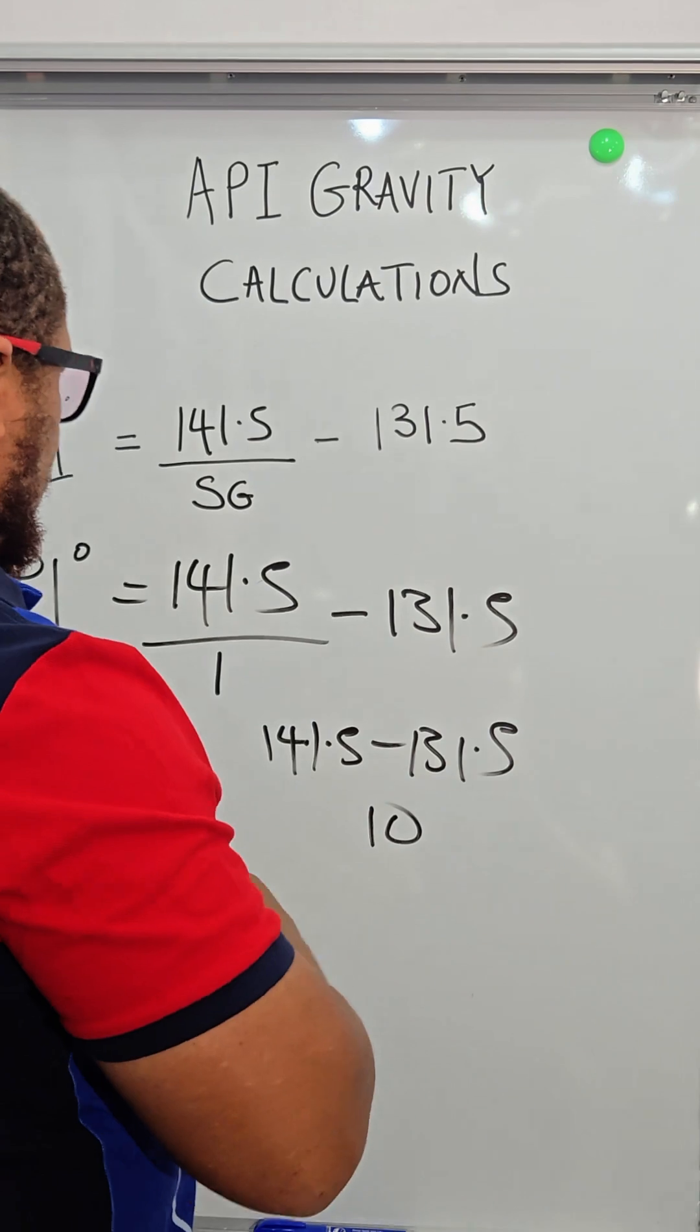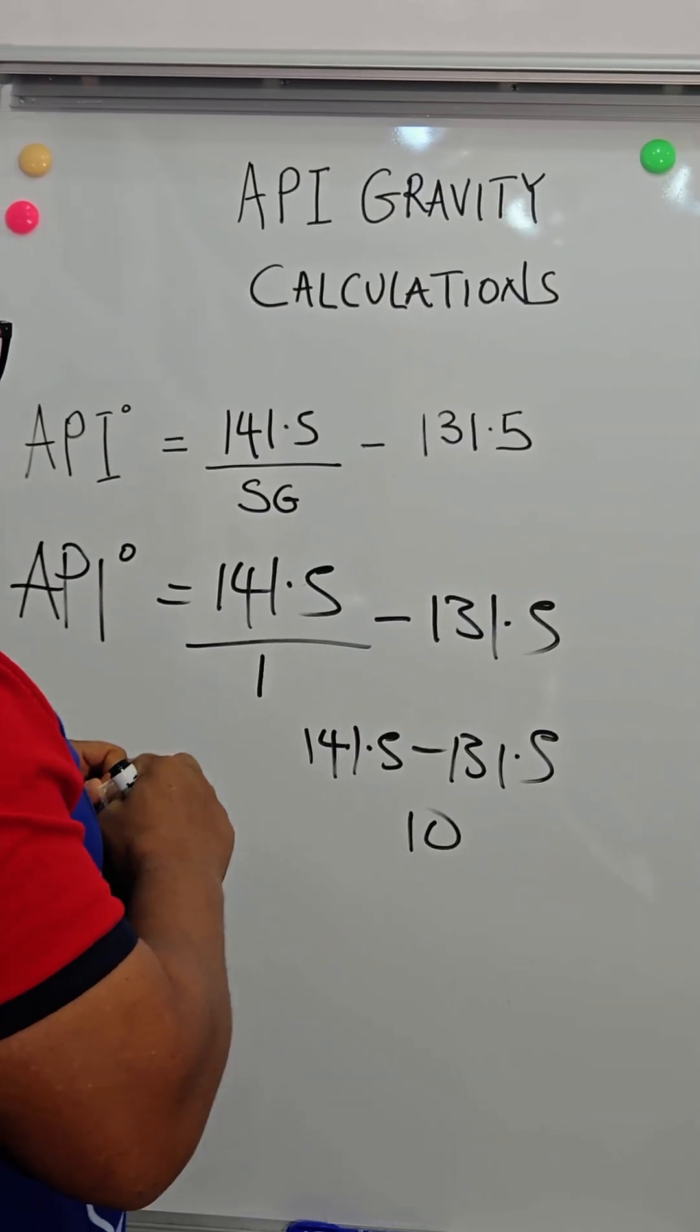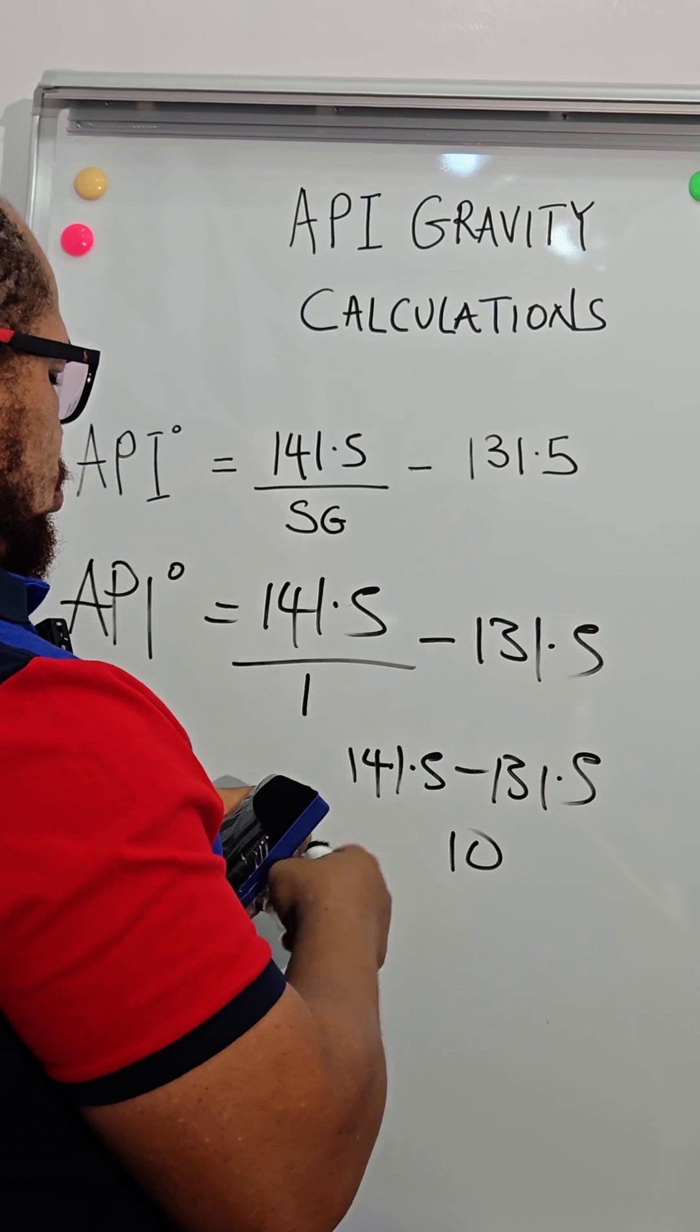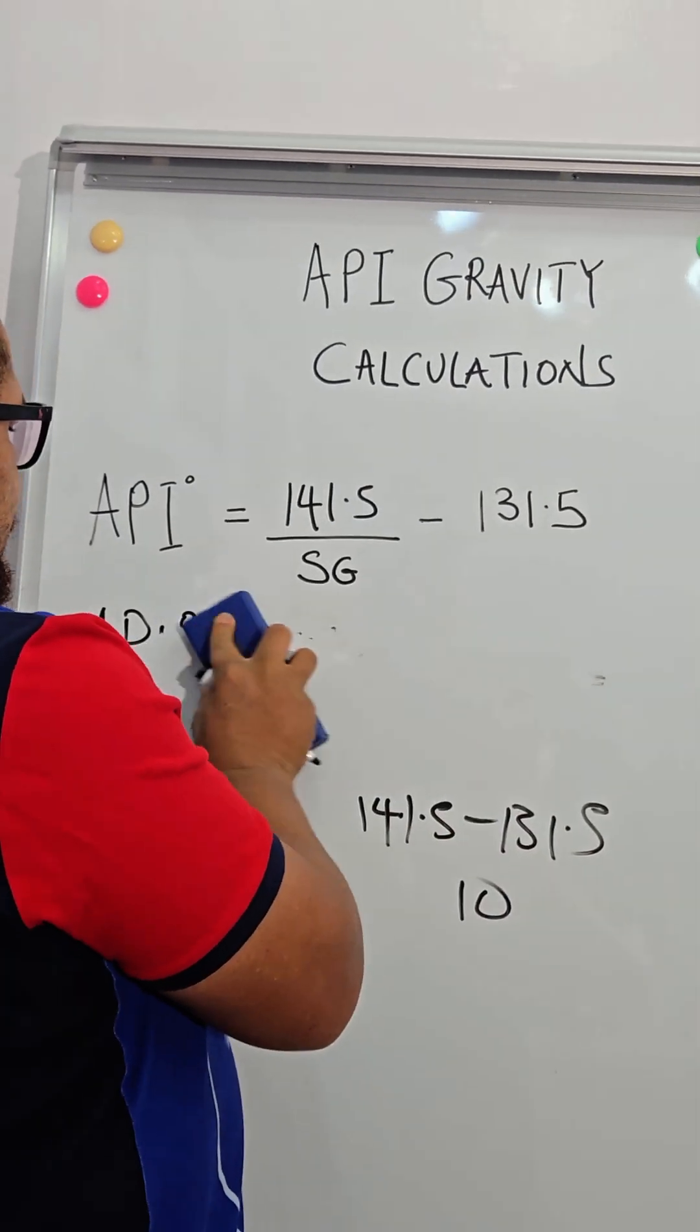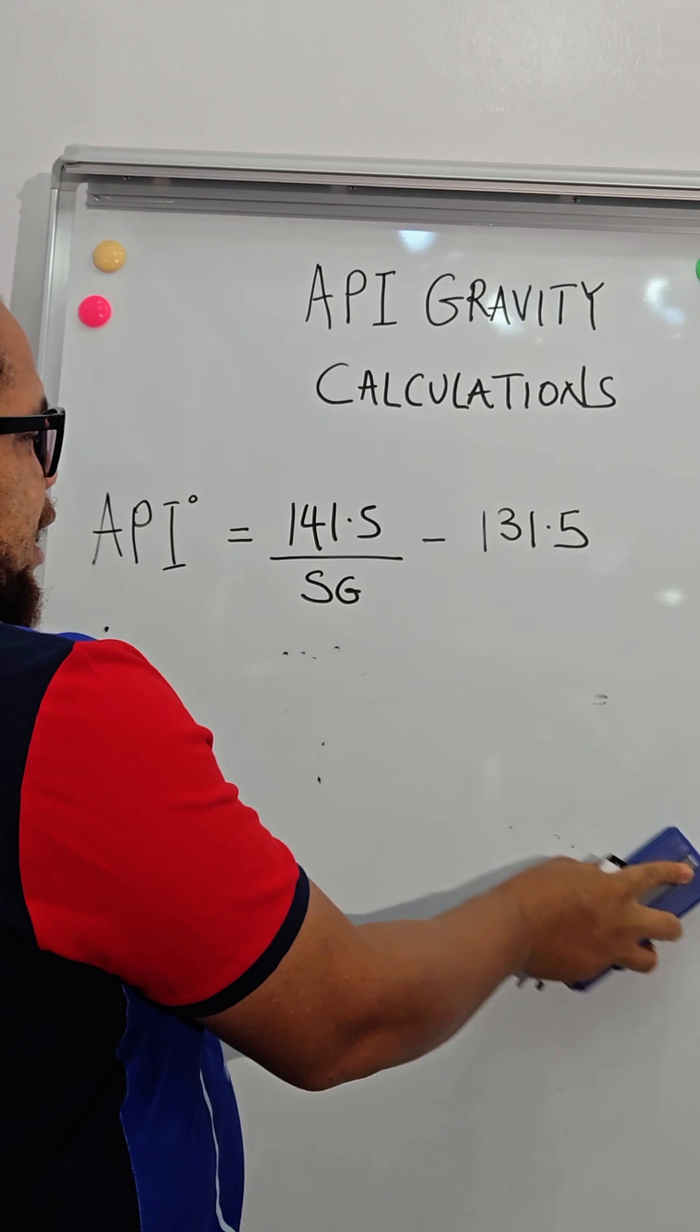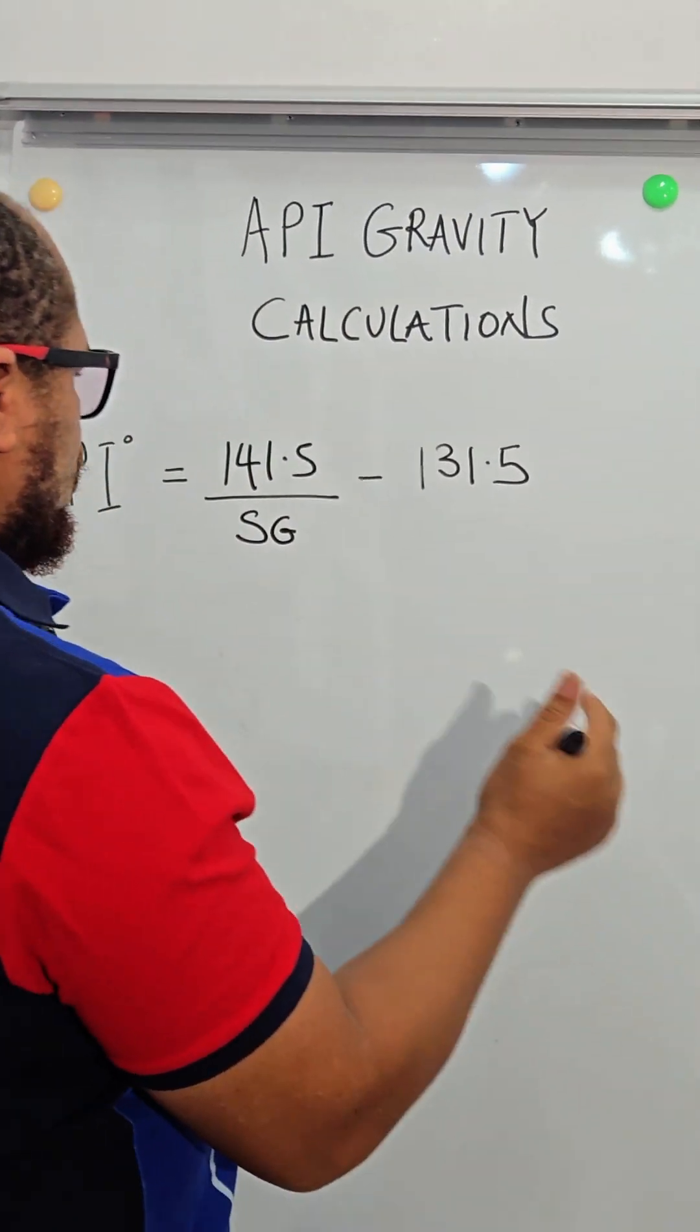So having done that quickly, we can calculate the API gravity of a particular fluid. Say for example, you want to calculate the API gravity of crude that the SG has been checked and found to be 0.79.